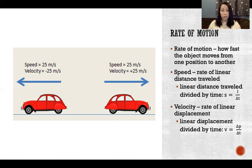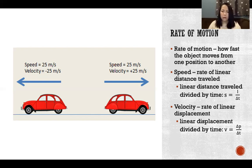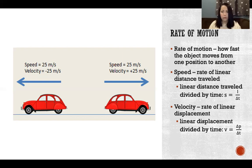Velocity is where we do care about direction. With velocity, we care about not only how much time has passed and what distance was traveled, but also the position and direction. Velocity is linear displacement divided by time. It matters whether I went three miles in one direction or three miles in a circle, because if I went in a circle and landed at the same place, I had no change in position — no linear displacement — whereas running three miles away results in a clear change in position.